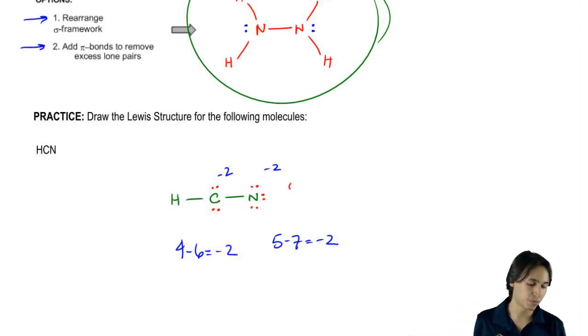So if I wanted to, I could skip all the way ahead and just add one bond here, which is going to make these both negative one. And then I could add another bond there, which is going to make these both zero.